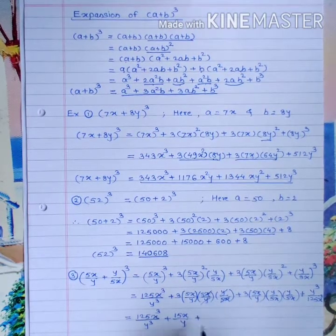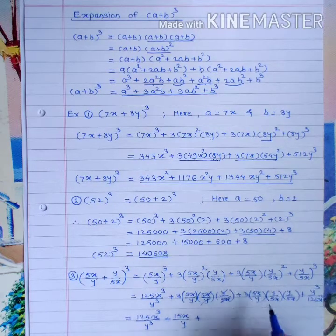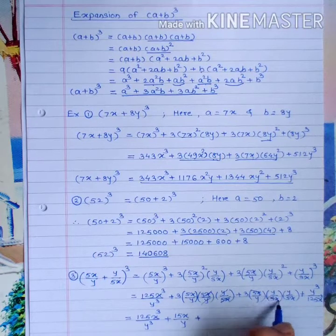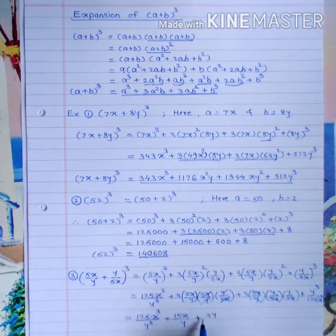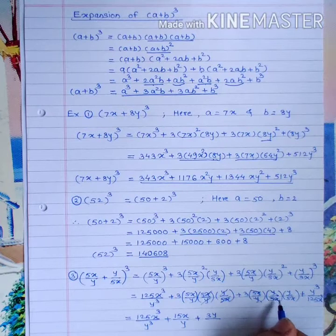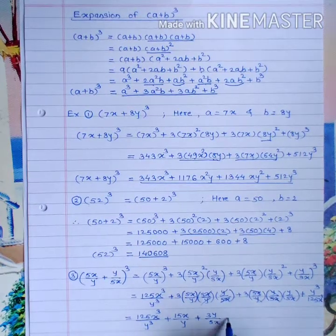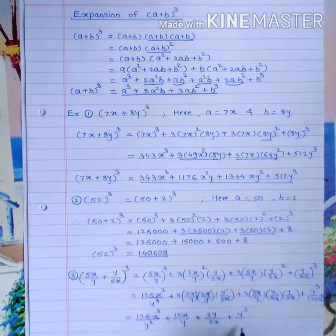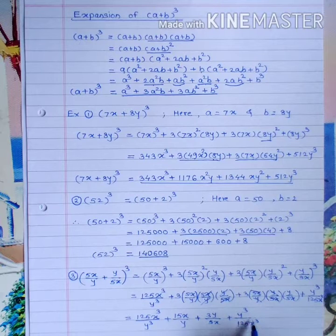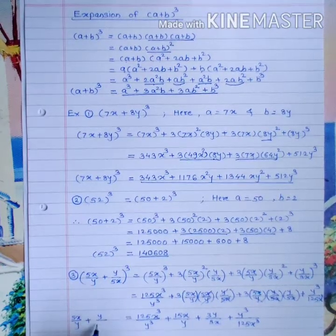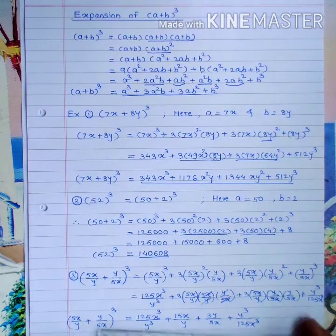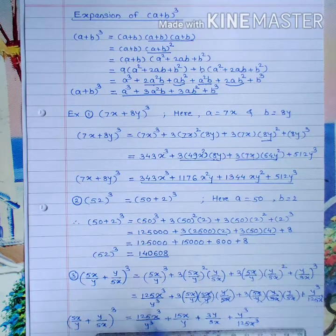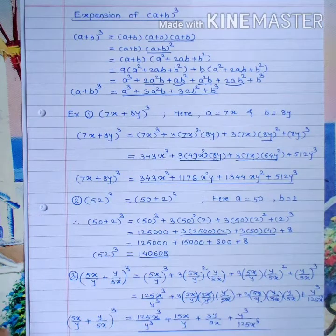Simplifying all terms: 125x³/y³ + 3(5x/y)²(y/5x) + 3y/5x + y³/125x³. So this is the expansion of (5x/y + y/5x)³. These are some examples solved using the expansion formula for (a+b)³.